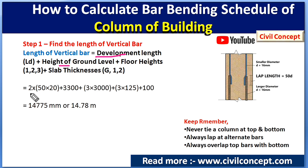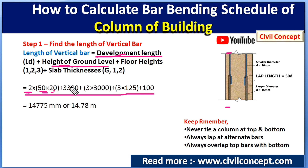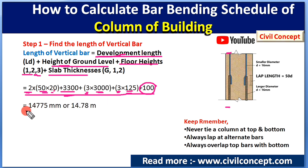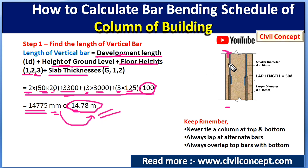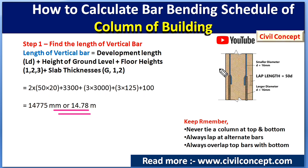Putting in the values: two development lengths = 2 × (50 × d), ground level height = 3300 mm, three floors × 3000 mm = 9000 mm, three slabs × 125 mm + 100 mm. After calculating all values, the total length comes to 14,775 mm, or approximately 14.78 meters. This is the required length of the single longitudinal rebar for the column.